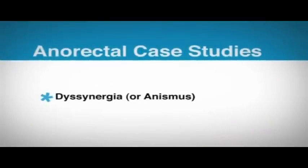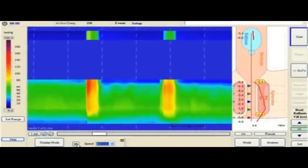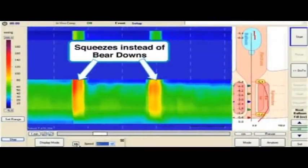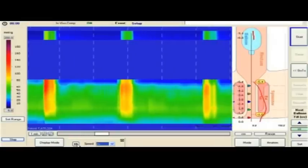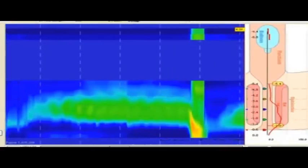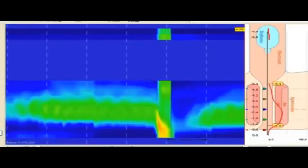Dysinergia, or anismus. In this case, when the patient is instructed to bear down, they squeeze instead. Additionally, rectal pressure is very high during these maneuvers. The difference is easily visualized when compared to a normal subject with appropriate bear down pressures.